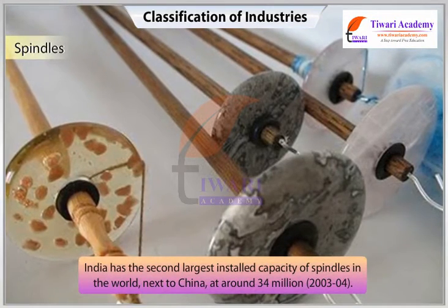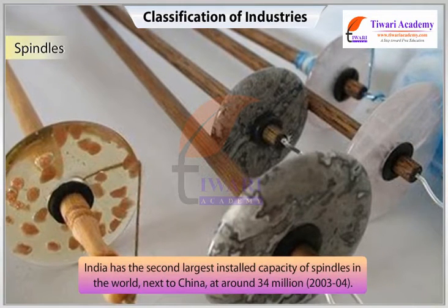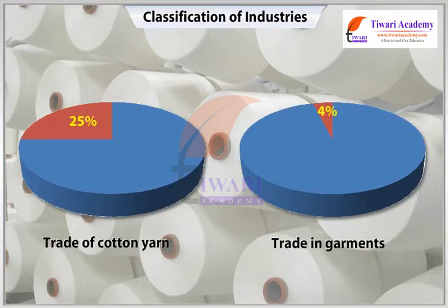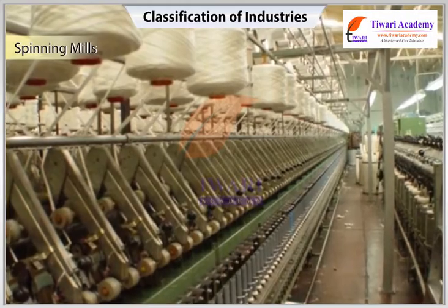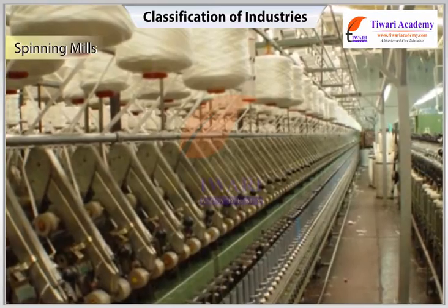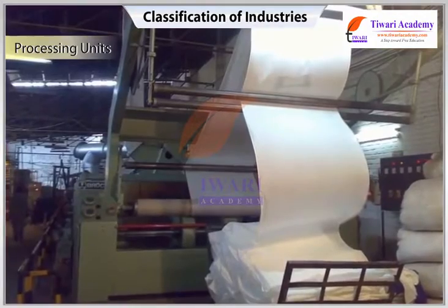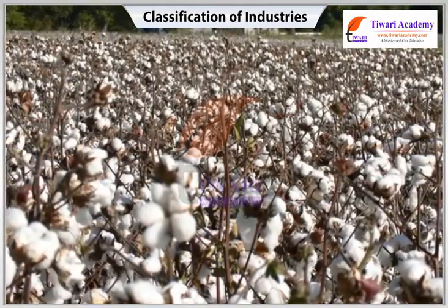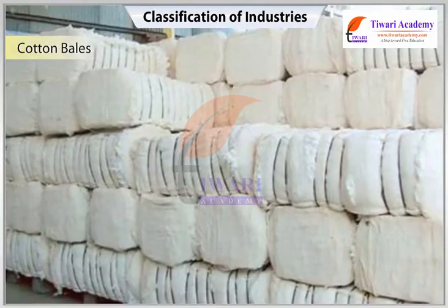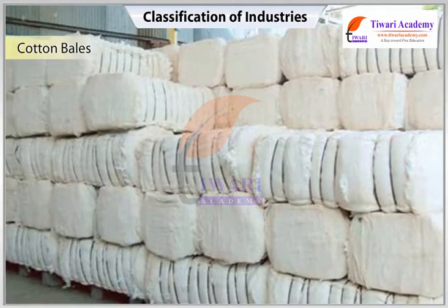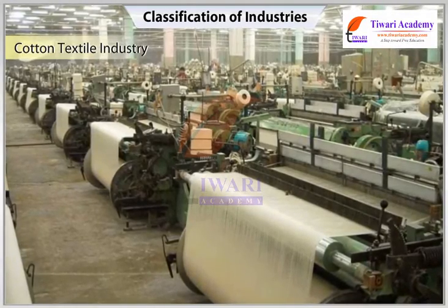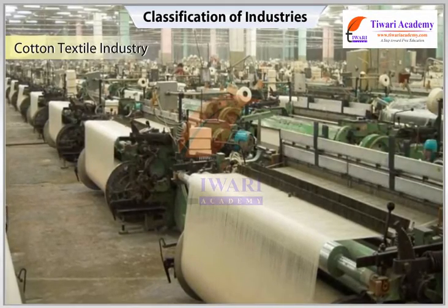India has the second largest installed capacity of spindles in the world next to China, at around 34 million in 2003–2004, and accounts for about 25 percent of total world trade in cotton yarn. However, trade in garments is only 4 percent of the world total. Spinning mills are of international level but weaving, knitting, and processing units are not utilizing high-quality yarn sufficiently. About 9,232 lakh bales were produced in 2004–2005, but imports are still needed. The industry suffers from unfavorable climatic conditions, erratic power supply, and outdated machinery in weaving and processing.